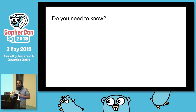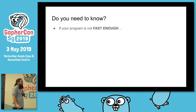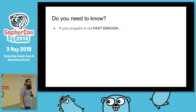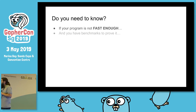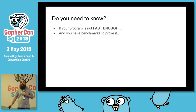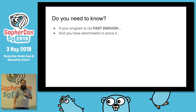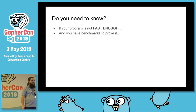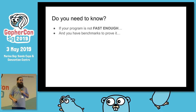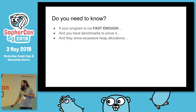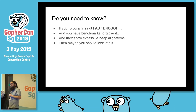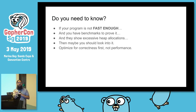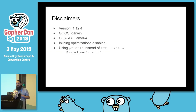Before you look into this, ask yourself: do you really need to know? You only need to know if all these things are true. First, if your program is not fast enough — if it's already fast enough, you're done. If your program is not fast enough and you have benchmarks to prove it — we don't guess about performance. If those benchmarks show excessive heap allocations, then maybe you should look into it. I really want you optimizing for correctness first, not performance.